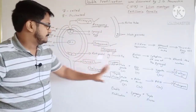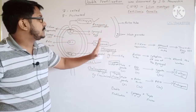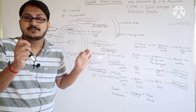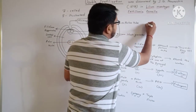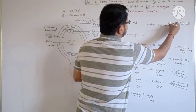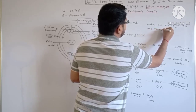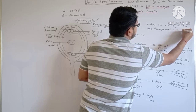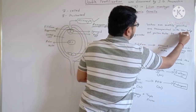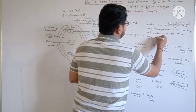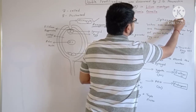The male gametes present in the pollen tube have to be transferred to the egg cell or polar nuclei. These male gametes are non-motile, which is why they are carried with the help of the pollen tube. When non-motile gametes are transported with the help of a pollen tube to the egg cell, such a process is known as siphonogamy.